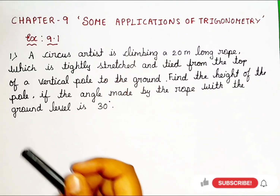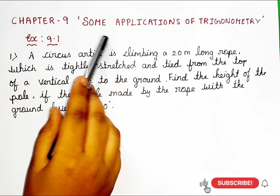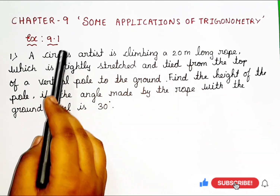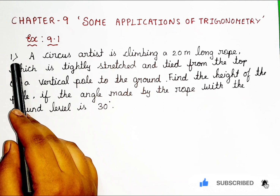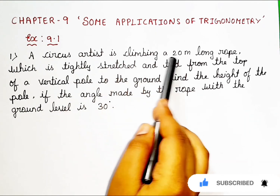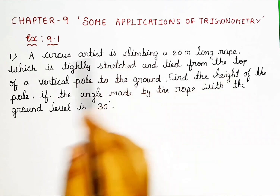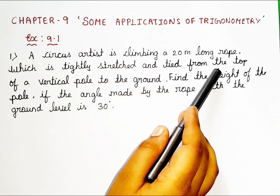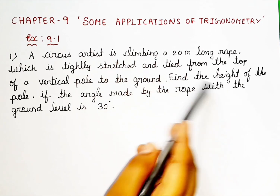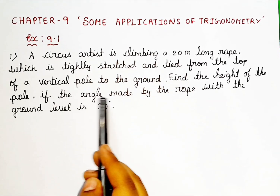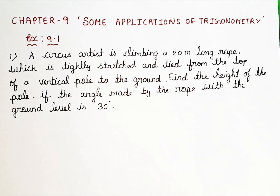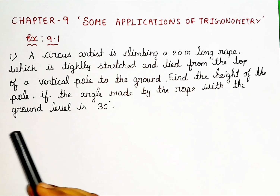Today we are going to be learning chapter 9, some applications of trigonometry, exercise 9.1, first question. A circus artist is climbing a 20 meter long rope which is tightly stretched and tied from the top of a vertical pole to the ground. Find the height of the pole if the angle made by the rope with the ground level is 30 degrees.